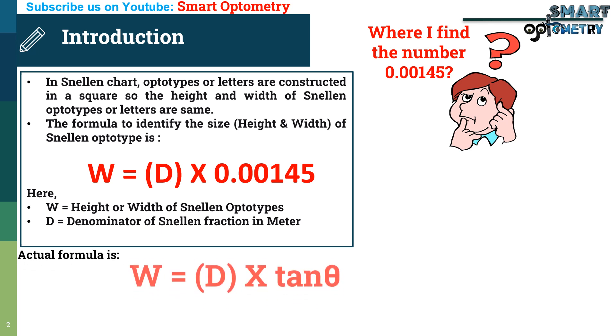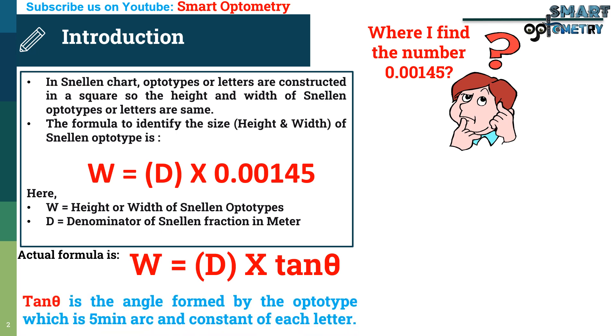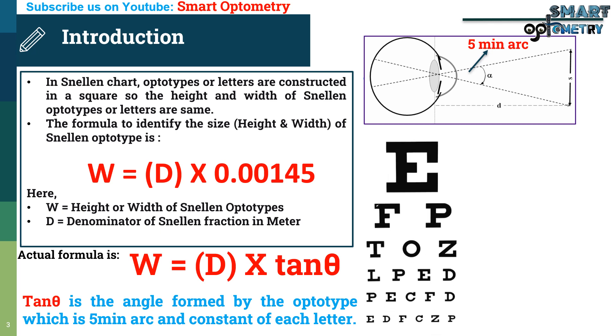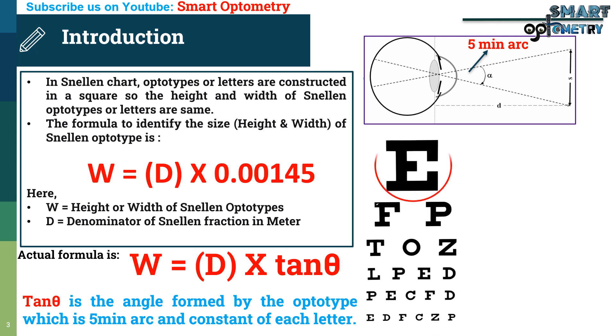The actual formula is W equal to D multiplied by tan theta. Here, tan theta is the angle formed by the optotype which is 5 minute arc and constant for each letter. In Snellen chart, each letter is constructed in such a way that they form an angle of 5 minute at the nodal point of eye. Letters from any line 6/60 or 6/6 form an angle of 5 minute arc at the nodal point of the eye.